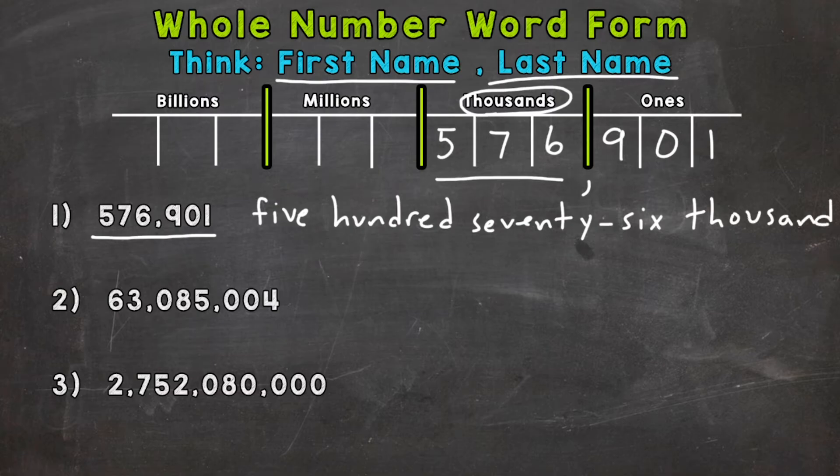And then we move on to this here. So 901 would be the first name there. Read the number as is. And when it comes to the ones period, we actually don't use a last name. It's just the number as is. Every other period, though, we go first name, last name, except for the ones. So we would wrap this up with nine hundred one.